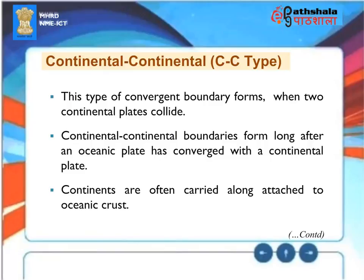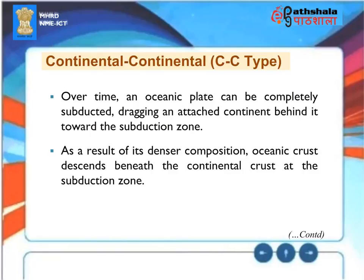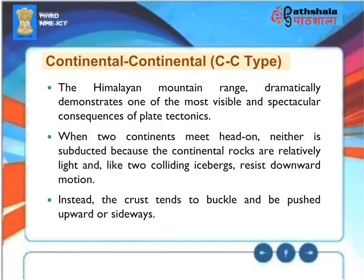Continental-continental convergence (C-C type) forms when two continental plates collide, long after an oceanic plate has converged with a continental plate. Continents are often carried along attached to an oceanic crust; over time, an oceanic plate can be completely subducted, dragging an attached continent toward the subduction zone. The Himalayan mountain range dramatically demonstrates one of the most visible consequences of plate tectonics. When two continents meet head-on, neither is subducted because continental rocks are relatively light and, like two colliding icebergs, resist downward motion. Instead, the crust tends to buckle and be pushed upward or sideways.